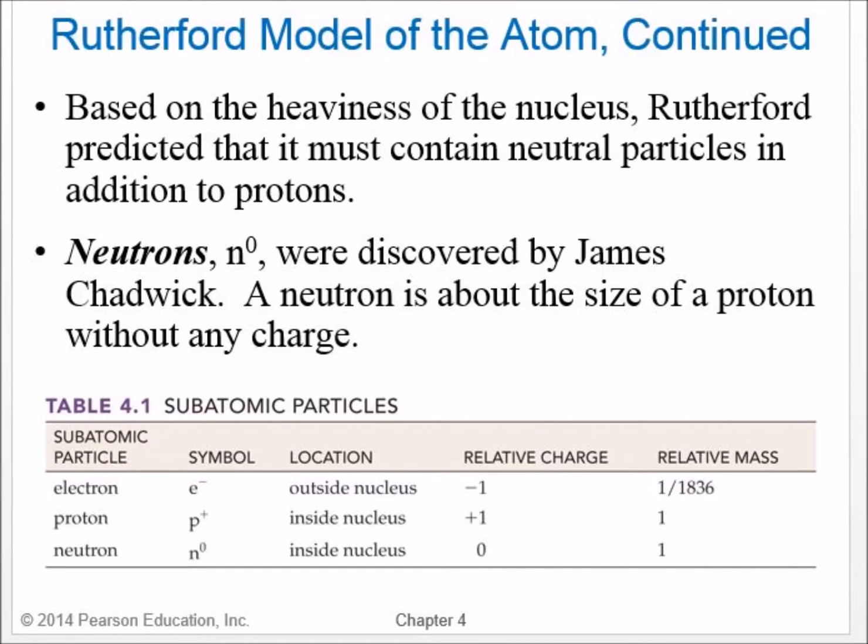If you said true, you are correct. Protons are heavier than electrons. Why? Because as you look at the mass, the proton number is one and the electron is one one-thousandth of a number. So therefore, that is true. Bullet point number two. The nucleus contains all the protons and neutrons of an atom. If you said true, you are correct. The protons and neutrons are smack dab in the middle of that nucleus. Bullet point number three. Protons and electrons are in the nucleus. Is that true or false? It is false because protons and neutrons are the only thing that's in the nucleus.